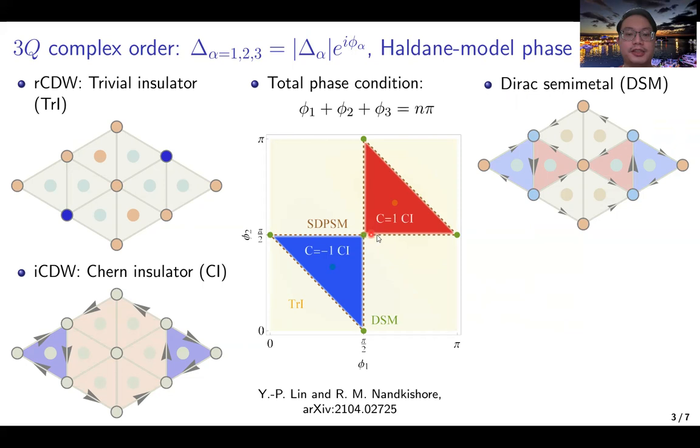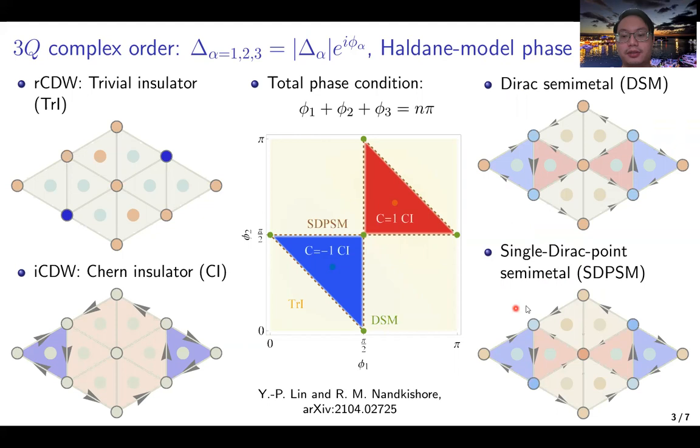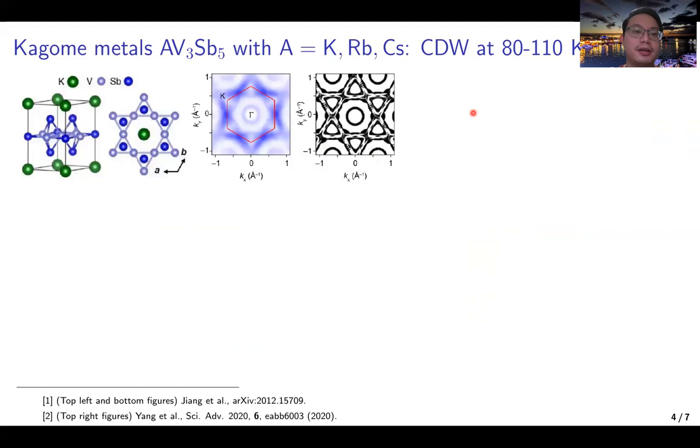If we move away from these symmetric points along the phase boundary, we will have a single Dirac point semimetal, where there is only one Dirac point at one M' point. It is interesting that we can realize such Haldane model phase diagram in the complex charge density waves. The next question is whether we can find it in practical materials.